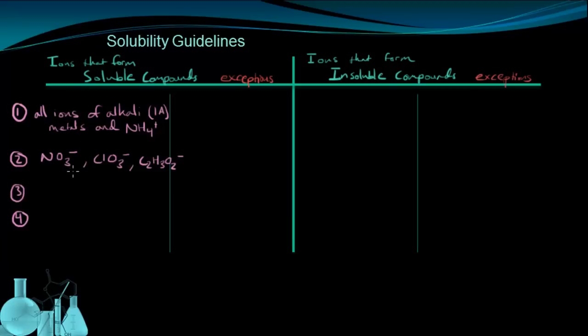The next two are important to mention because they do come up often, but they do have some exceptions we need to pay attention to. The third rule says that halide ions are soluble. That means a chloride ion, the bromide ion, and the iodide ion. However, there are exceptions to this.